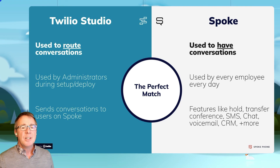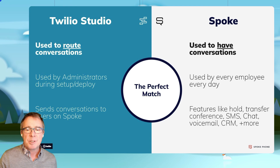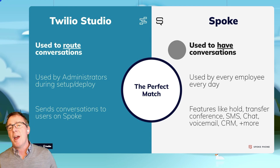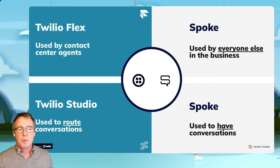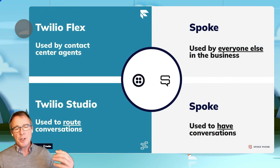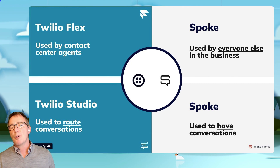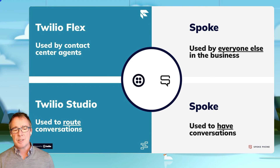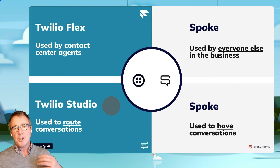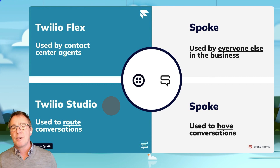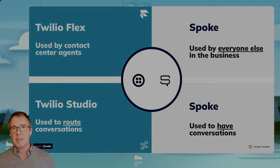So to summarize: with Studio, you route the conversations to where you want them to go, and on Spoke, you have the conversation. Twilio Flex is used by contact center agents. Spoke is used by everybody else in the business. Twilio Studio is used to route conversations. Spoke is used to have conversations.